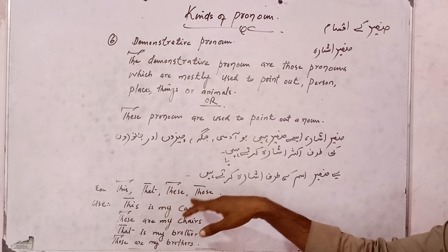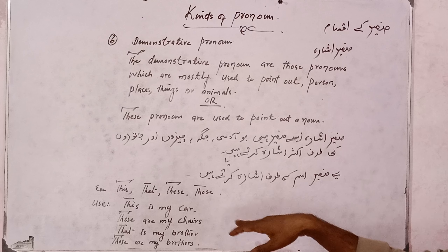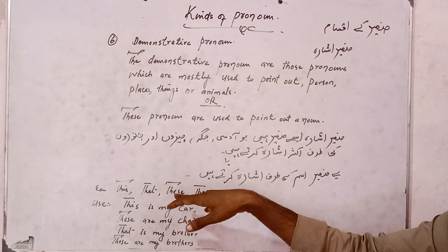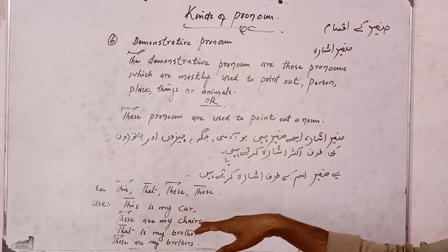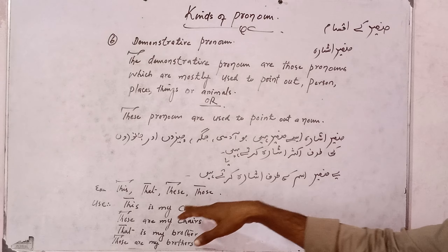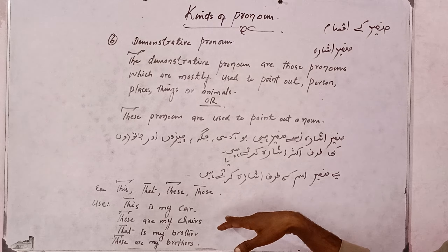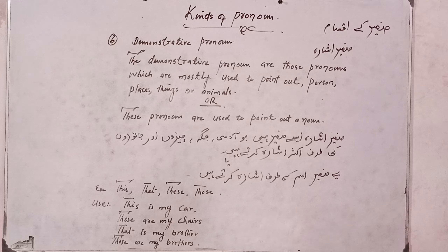The demonstrative pronouns are: this, that, these, and those. This and that are singular, and these and those are plural.